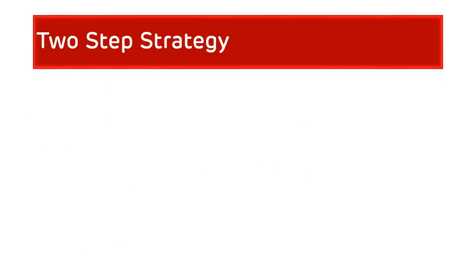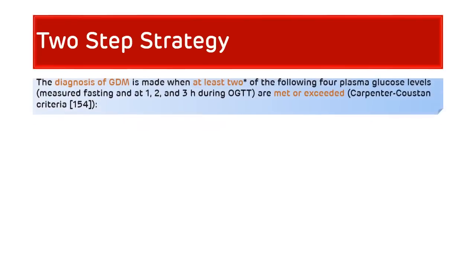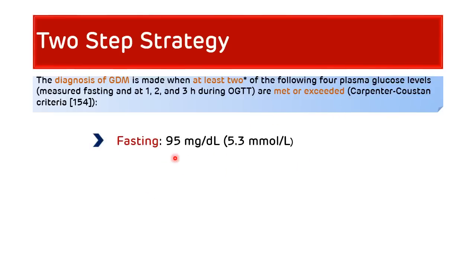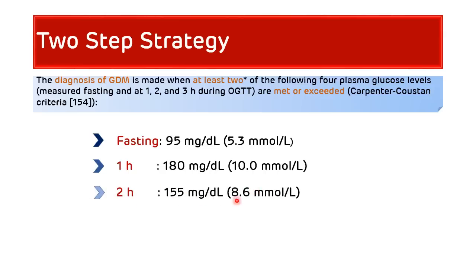For interpretation of the two-step strategy results, the diagnosis of GDM is made when at least two of the following four plasma glucose levels are met or exceeded: fasting value more than or equal to 95 mg/dL; one-hour value more than or equal to 180 mg/dL; two-hour value more than or equal to 155 mg/dL; and three-hour value more than or equal to 140 mg/dL.